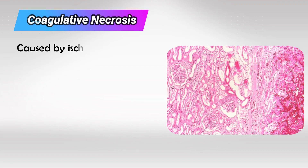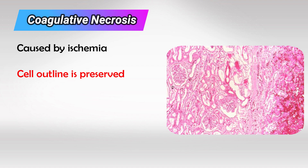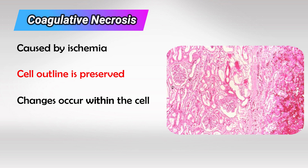The first in our list is coagulative necrosis, and this involves ischemia to any organ. In this type, the cell outline is preserved but the inner components are damaged. We do see the cell cytoplasmic membrane, but the inner components are heavily changed, like a nuclei that has disappeared, or cytoplasmic matter that is more receptive to dye.